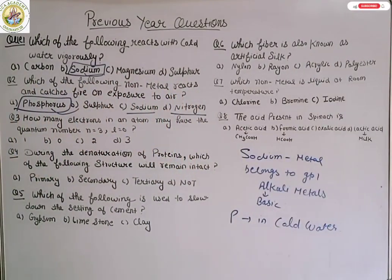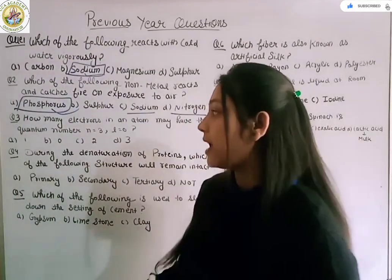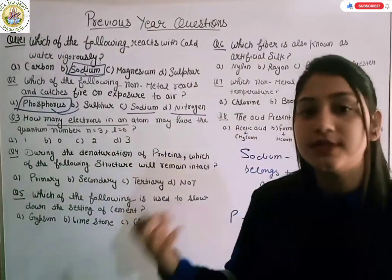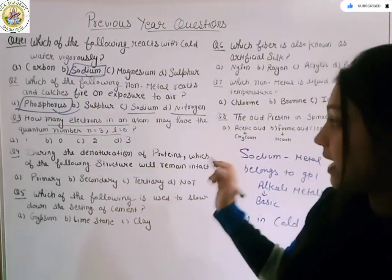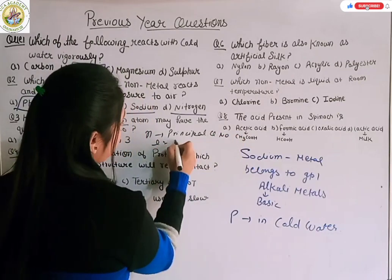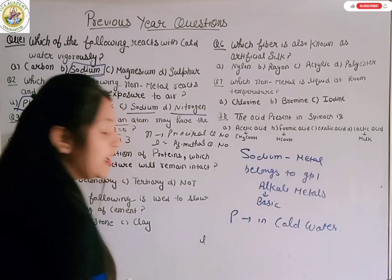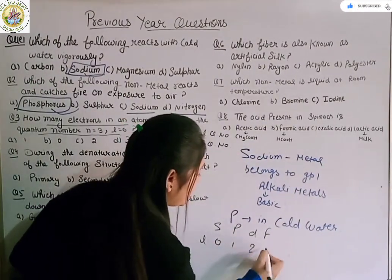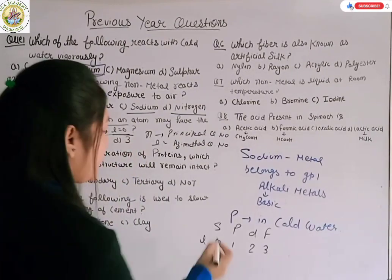Next question is how many electrons in an atom may have the quantum number n is equal to three and l is equal to zero. Now you have the quantum number n equals three and l equals zero. n is the principal quantum number and l is the azimuthal quantum number. See how we check the value. We have the sub shells S, P, D, F which is 0, 1, 2, 3. Here l is 0.